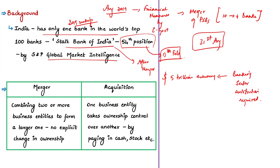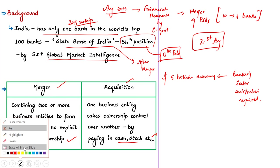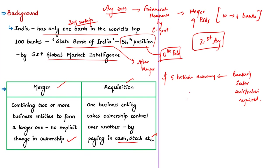Merger is in contrast to an acquisition, where one business entity takes ownership control over another by paying in the form of cash, stock, or other means. In public sector banks, the government is the majority shareholder. When two or more public sector banks merge, there is no change in ownership — just a restructuring done by the government.